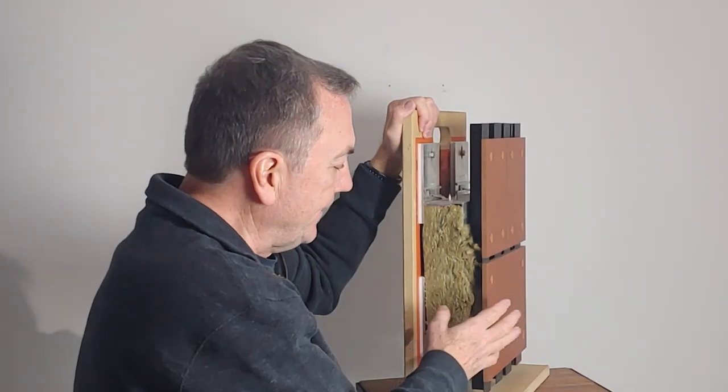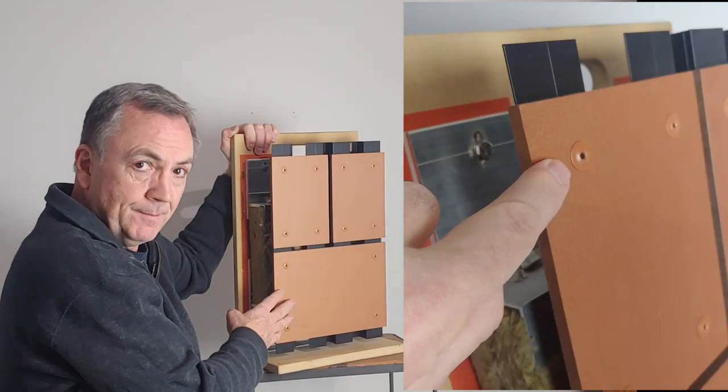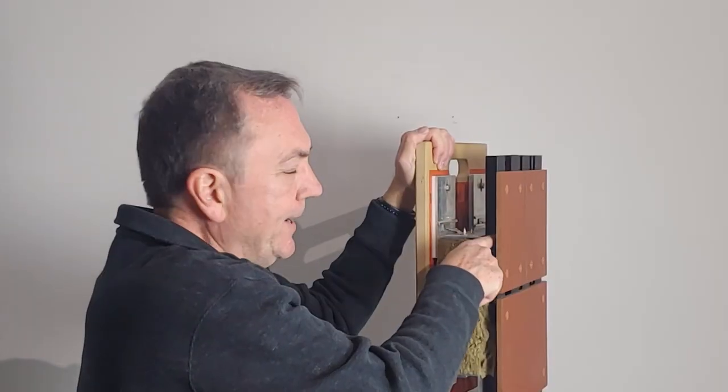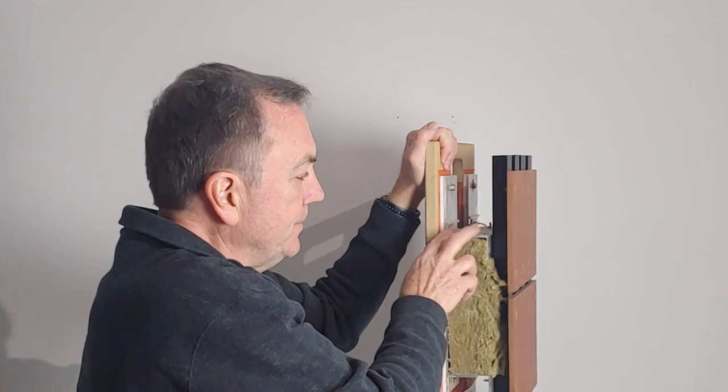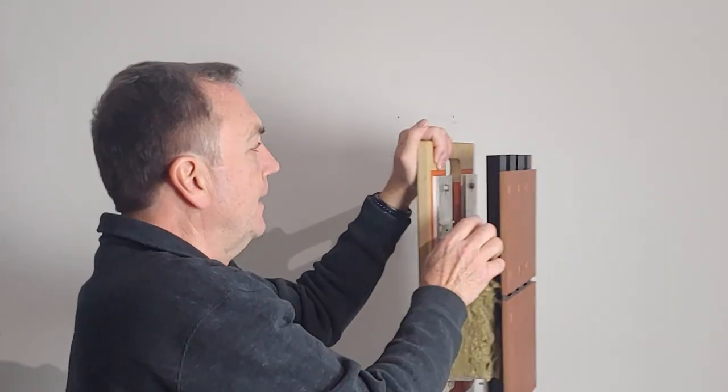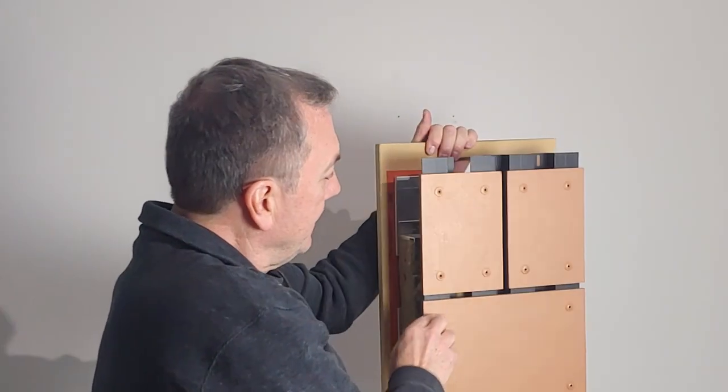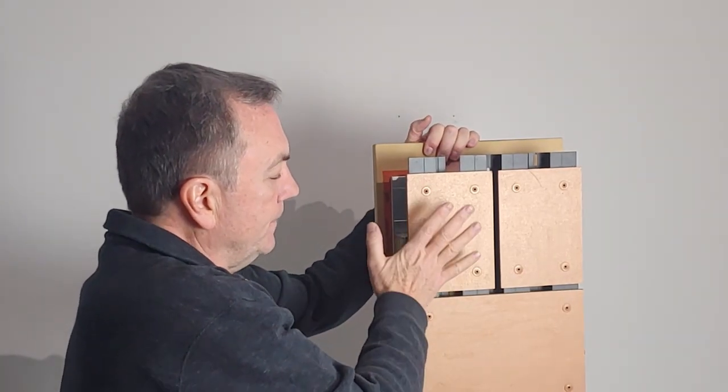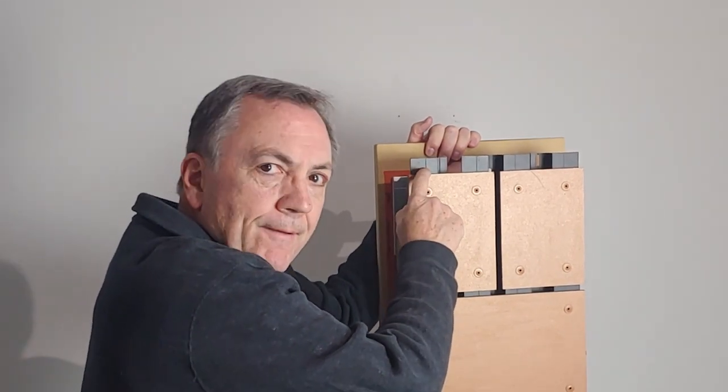Then they fasten the fiber cement board onto these metal brackets, and those metal brackets are attached to the aluminum brackets. Those metal brackets have a flange coming out here, and it allows for the panel of the rain screen to be connected to that flange.